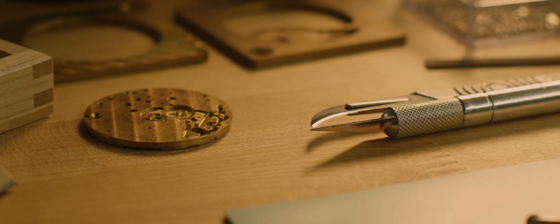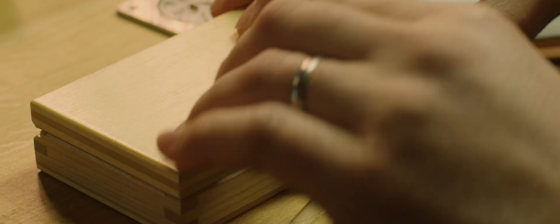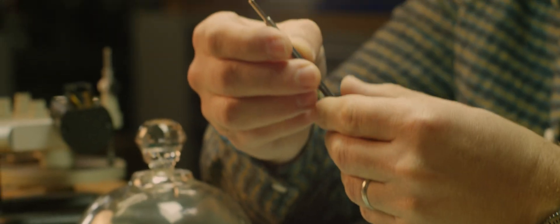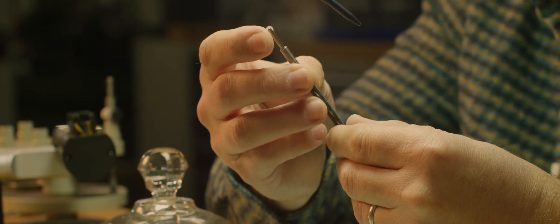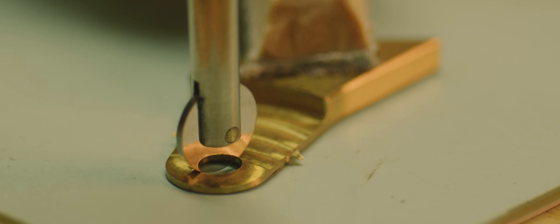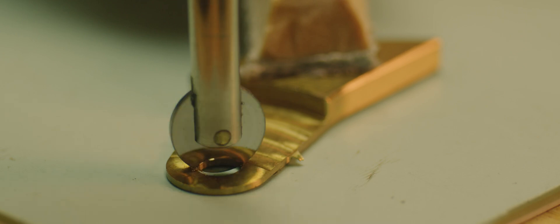So from here we have to use a number of specialized tools. We have different tools such as countersinks like this one. It actually has a hardened steel end here and it's just a circle that we can place onto a drilled hole, twist it, and it will remove that top corner. Anything that's loose there will come off.